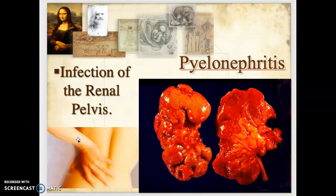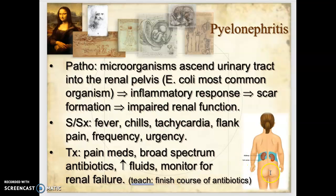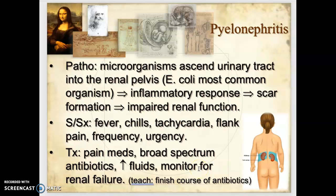Pyelonephritis is an infection of the renal pelvis. Microbes enter the urinary tract, ascend the ureter to the kidneys, and cause an inflammatory response with scar formation. Signs and symptoms include fever, chills, tachycardia, flank pain, frequency, and urgency. Treatment includes broad-spectrum antibiotics — patients must complete the full course — increased fluids to flush bacteria, and monitoring for renal failure. Repeated infections causing scarring can ultimately lead to renal failure.